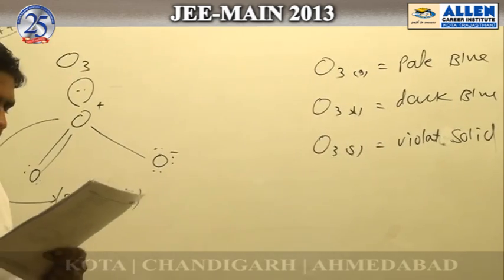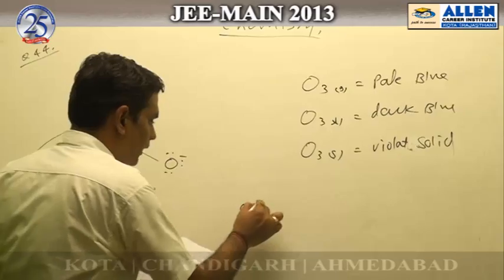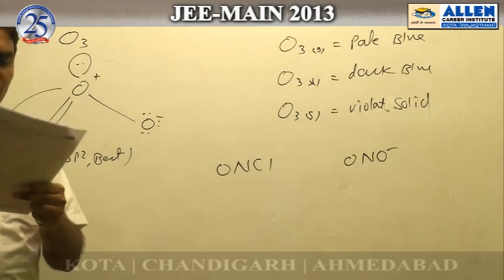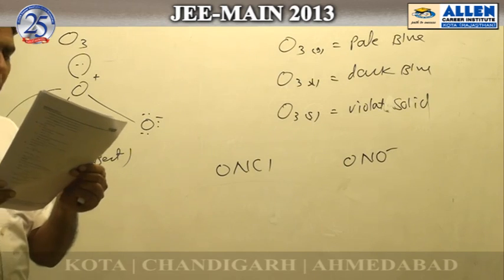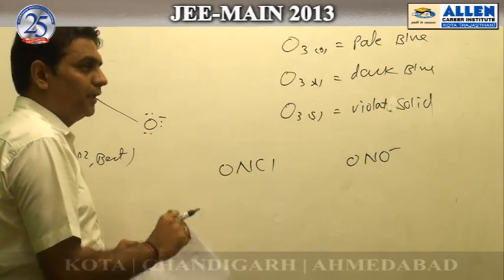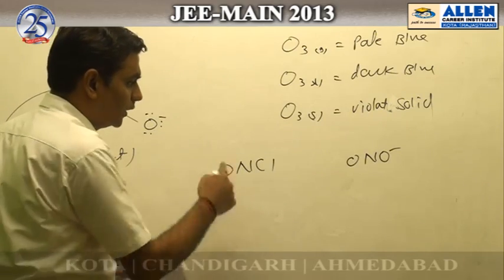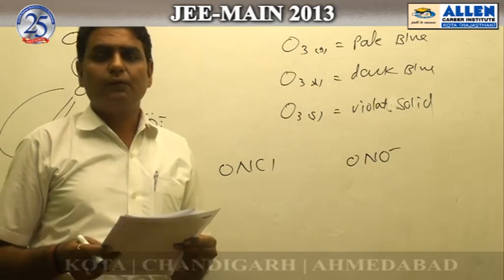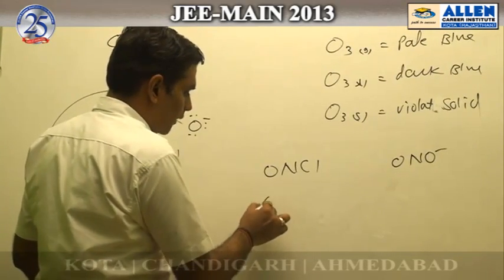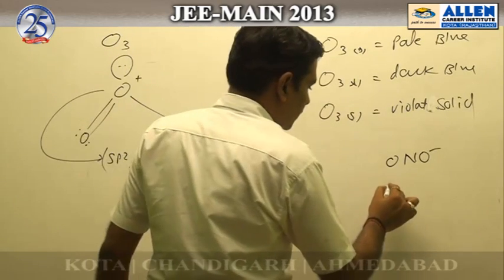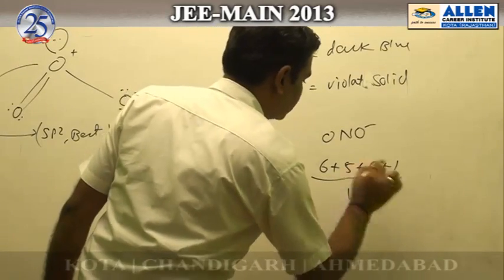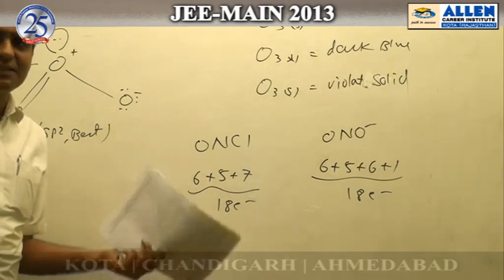Options two, three, and four are exactly correct. Regarding option one: ONCl and ONO⁻ — these two molecules appear not isoelectronic by total electron count, but if two species have the same number of valence electrons they can be considered isoelectronic. ONCl has 6+5+7=18 valence electrons and ONO⁻ has 6+5+6+1=18 valence electrons, so they can be considered an isoelectronic pair. Therefore the best answer to this question is option one.